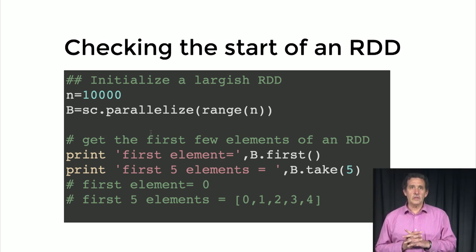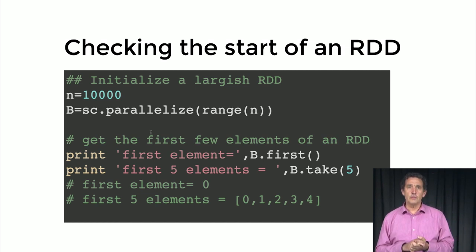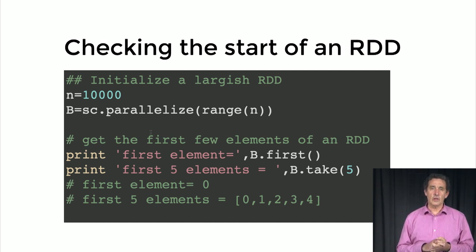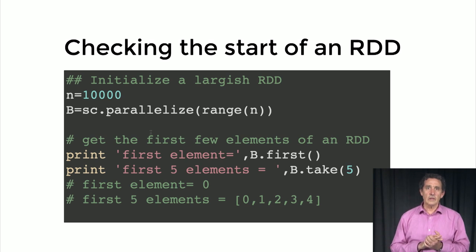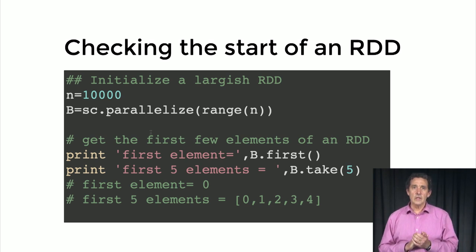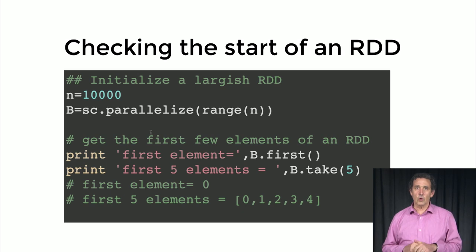You don't need to necessarily look at the whole RDD if you want to see something. You can just take the first few elements, which is very convenient. Here we have an RDD of size 10,000. We're asking to get the first element or the first five elements and print them. That won't take a lot of time because you're only taking a small number of elements.